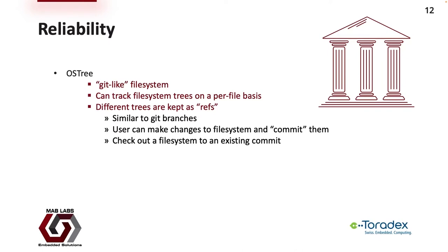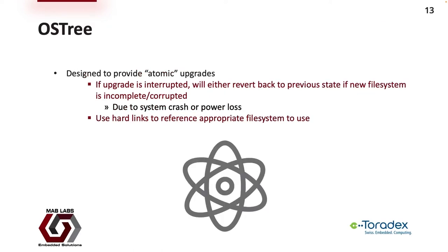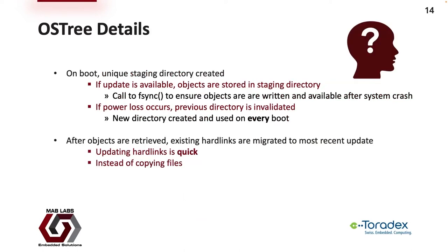In addition to security, reliability is also a critical requirement when performing OTA. One framework that offers reliability is OSTree. It is a Git-like file system where each file is tracked as an object, similar to Git. Entire file system trees can be tracked on a per-file basis, and different trees are kept as references — similar to Git branches. A user can make changes to the file system and commit them, or an entire file system can be checked out at a particular commit point. OSTree is designed such that updates are atomic — if an update is interrupted, OSTree will revert the entire file system back to the previous state.